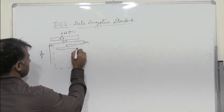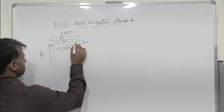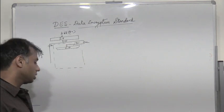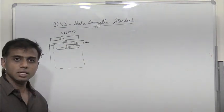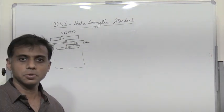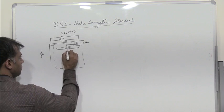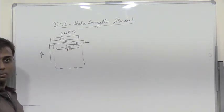The first block is E/P, which is nothing but expansion and permutation. In SDES, 4 bits would expand and permute, and the output was 8. But here, the 32-bit is expanded and permuted to give 48 bits.